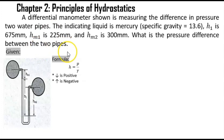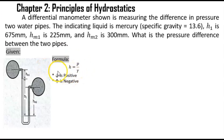The pressure head formula is equal to pressure over specific weight. We'll make an assumption about sign convention: if a fluid column is going downward, it is positive; if it is going upward, it is negative.